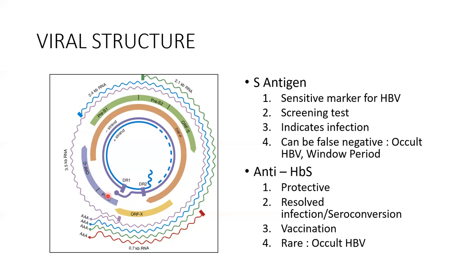There is the core and pre-core region. Pre-C stands for the pre-core region, which forms the envelope of the virus, and ORFC stands for the core region. It is important to remember that the pre-core region produces the E antigen — the envelope antigen measurable in the blood. Whereas the core antigen is never present in the blood; only the antibody to the core antigen can be measured. The DNA polymerase enzyme helps in the packaging of the virus.